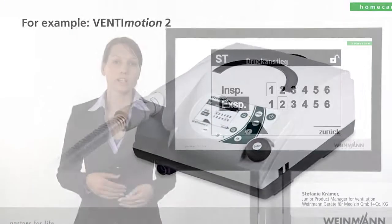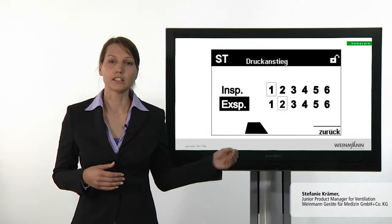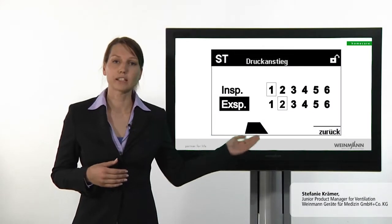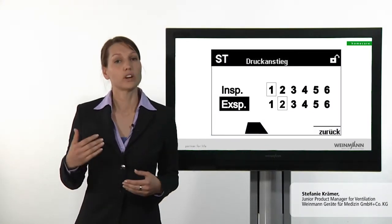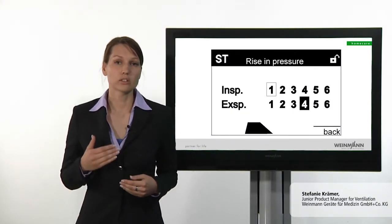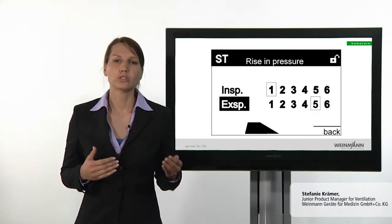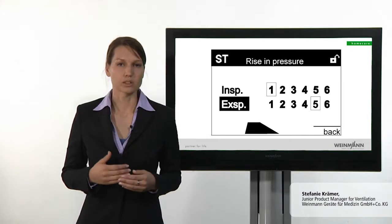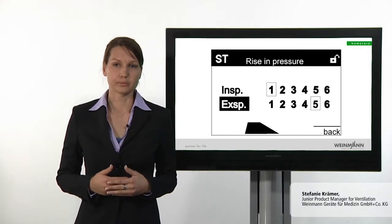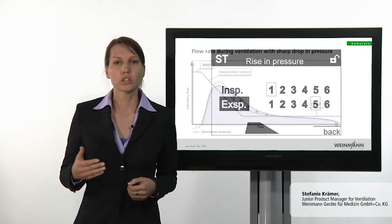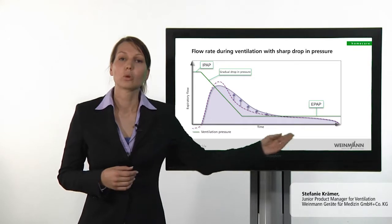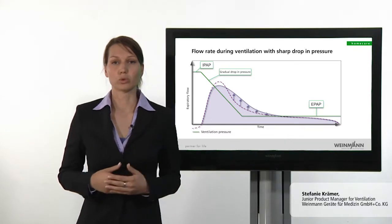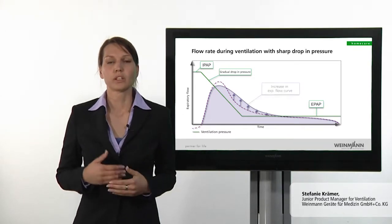The device can be set to vary the speed of the drop in pressure. Level 1 is the fastest and Level 6 the slowest drop in pressure. This produces a gradual transition between inspiration and expiration pressures.